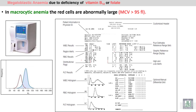We will look at the report for macrocytosis or macrocytic red blood cells. You can see here the red blood cell results from the automated cell counter. In this report, we find that the MCV is 102 femtoliters, which is greater than 95 femtoliters, so this is a macrocytic or large red blood cell.